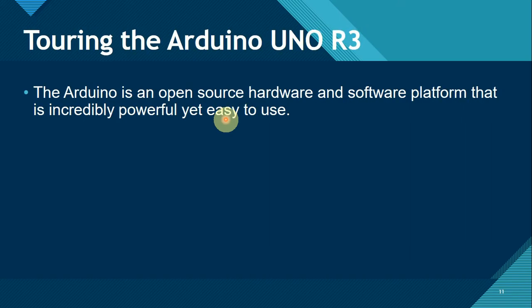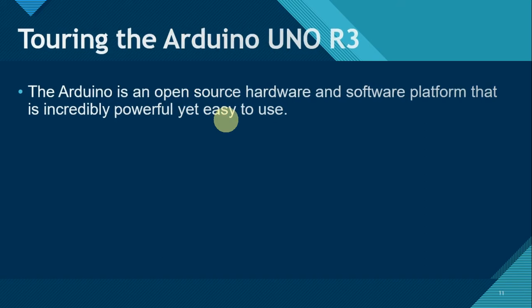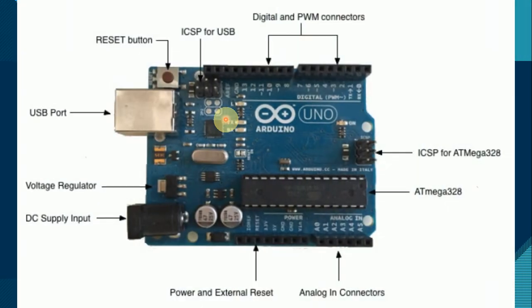Since the Arduino Uno R3 is the most popular Arduino board available, we're going to specifically scrutinize it. Arduino is an open source hardware and software platform that is incredibly powerful yet easy to use. This is the actual picture of the Arduino Uno R3. You can see the parts, including analog in connectors from A0 to A5, and digital or PWM connectors from pin 0 up to pin 13. All the parts are discussed in the following slides.